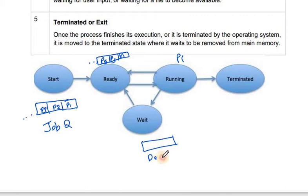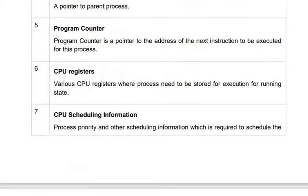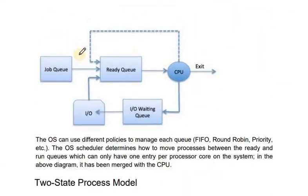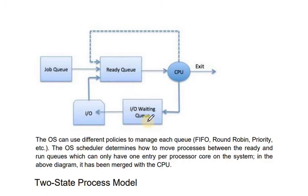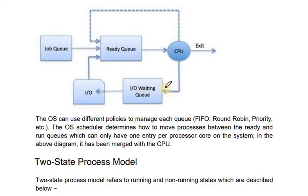Here you can see the device queue. A process goes from the job queue to the ready queue, then uses the CPU. It may go back to the ready queue for a higher priority preemption, or wait in an I/O waiting queue or device queue. After the I/O operation is performed, the process returns to the ready queue.